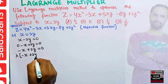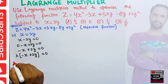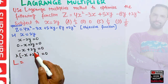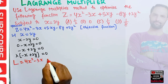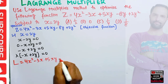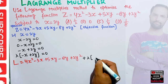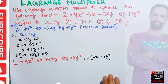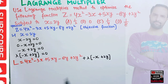We form the Lagrangian function by adding the objective function and the resulting constraint multiplied by lambda. So our Lagrangian is: L = 4x² - 3x + 5xy - 8y + 2y² + λ(-x + 2y). This Lagrangian function is formed by adding the objective function and the constraint term.